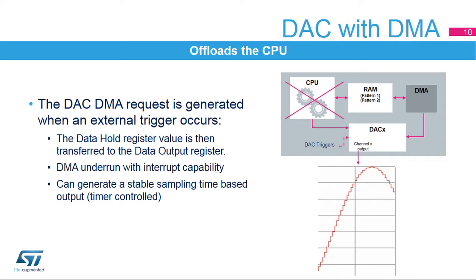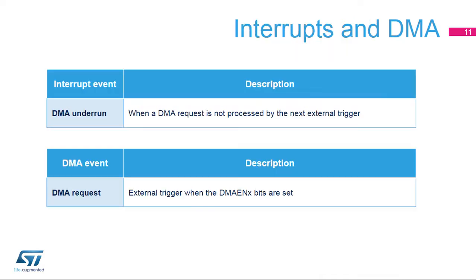The DAC can also create DMA requests from the trigger signal. Once a trigger is detected, the data hold register value is transferred to the data output register. Then, the DMA request is generated to obtain the new data for the data hold register. As the update of the output data register is initiated directly by the trigger signal, the DAC output signal will not have jitter, so that it can create a stable sampling time signal output, making it easy to filter out the sampling frequency. The DAC can also generate a DMA under-run interrupt.